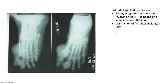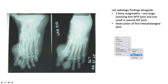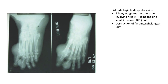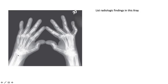This X-ray of the feet shows two bony outgrowths — one involving the first metatarsophalangeal joint and one small one in the second DIP joint — together with destruction of the first interphalangeal joint with an overhanging edge. This speaks to chronic tophaceous gout.